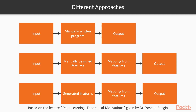Finally, there is the deep learning approach, where we train neural networks. The main advantage is that we can use raw data without predefined features. The downside is that we need a lot of data and a lot of computing resources for training.